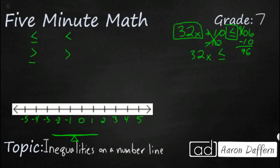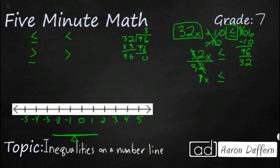Now we've got this coefficient of 32, and it's held on by multiplication — because when there's a number next to a letter with no operator in view, you assume it is multiplication. The inverse operation is division, so we divide both sides by 32. 32 over 32 just makes 1. And 96 divided by 32 is 3 — no remainder. So 32 over 32 becomes 1x, but we don't need to write that 1; it's implied. So x is less than or equal to 3.